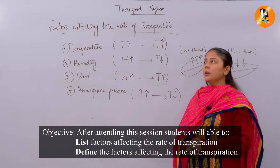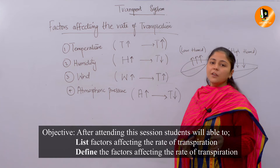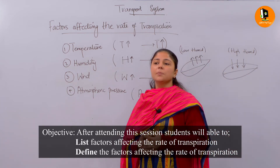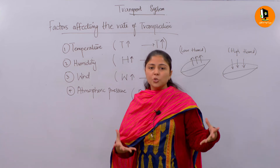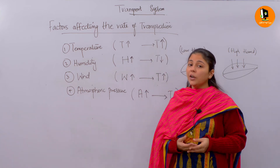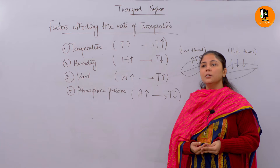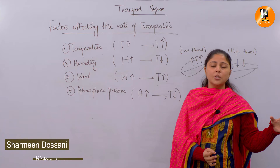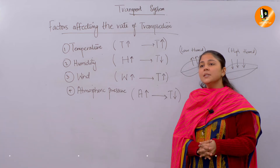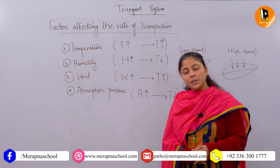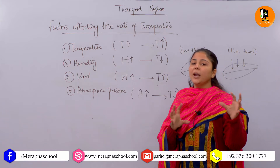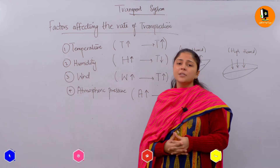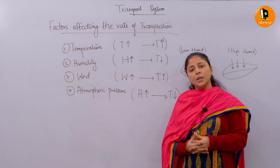I'm back with another topic: factors affecting the rate of transpiration. In my last video I discussed the opening and closing of stomatas, where we covered three types: flaccid, turgid, and plasmolyzed. Stomatas are a ventilator or opening that allow water molecules or gases to move in and out of the leaf structures.